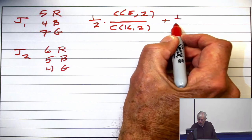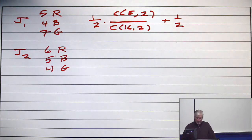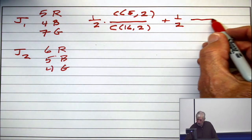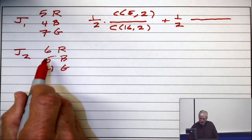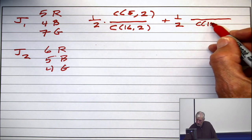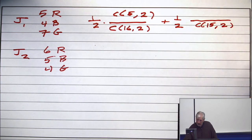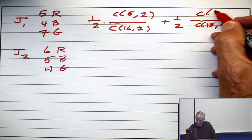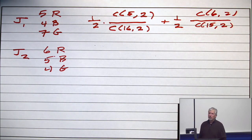And then half the time I'm going to choose the second jar. And if I choose the second jar, the calculation is similar. It just gives you a slightly different answer. Here there are 15 marbles in the denominator. And in the numerator, it's C of 6, 2. Everybody see how that's done?